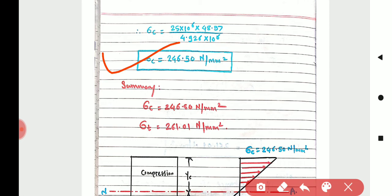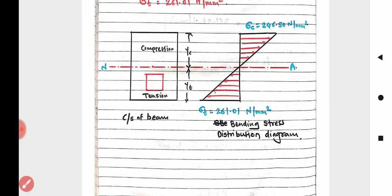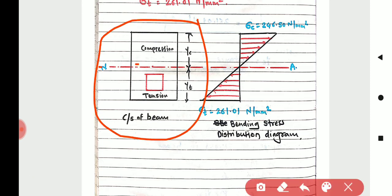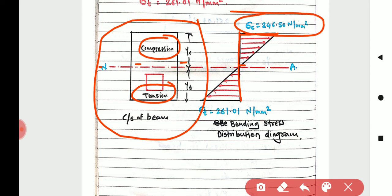To summarize: we have found σc and σt values. Finally, draw the bending stress distribution diagram. Divide the section at the neutral axis — the upper zone is in compression and the lower zone is in tension. Draw a baseline and show σc on the upper (right-hand) side and σt on the lower side, representing maximum compressive and tensile bending stresses respectively.